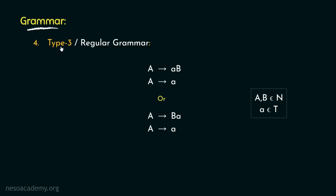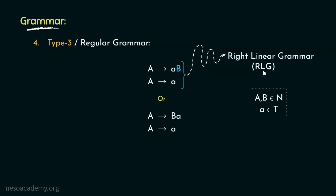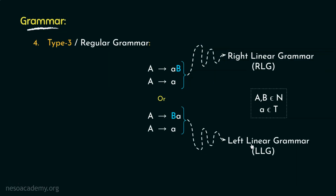Observe the right hand side of the first form of production — the non-terminal is at the rightmost position, which is why it is called the right linear grammar or RLG. In the second form, the non-terminal is at the leftmost position, so it is called the left linear grammar or LLG. Any grammar having all its production rules of the form either RLG or LLG — remember, either one or the other, not a mixture of the two — will be called the type 3 or regular grammar.